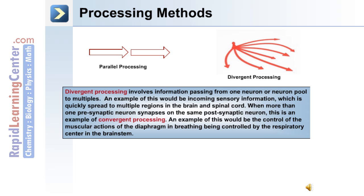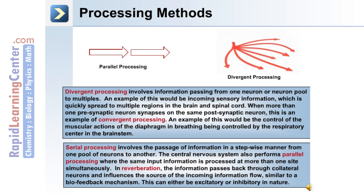In divergent processing, information is passed from one neuron or neuron pool to multiples. An example is incoming sensory information, which is quickly spread to multiple regions of the brain and spinal cord. In convergent processing, more than one presynaptic neuron synapses on the same postsynaptic neuron — an example is control of the diaphragm in breathing by the respiratory center in the brain stem. Serial processing involves passage of information in a stepwise manner from one pool of neurons to another. Parallel processing is where the same input information is processed at more than one site simultaneously.